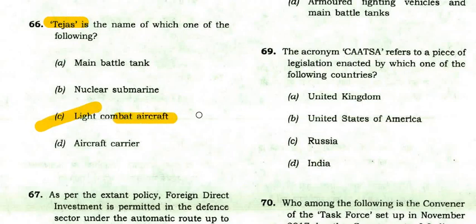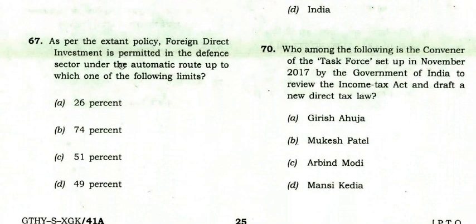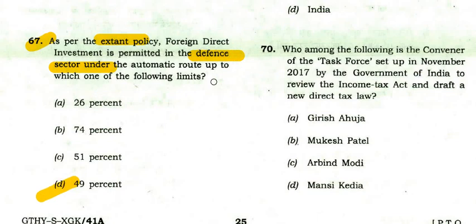As per the extant policy, foreign direct investment is permitted in the defense sector under the automatic route up to which limit? The right option is D: 49%. In the defense sector, up to 49% FDI is allowed under the automatic route.